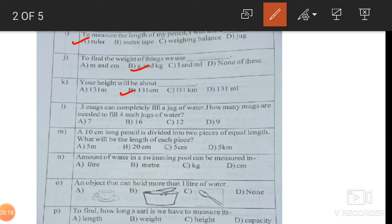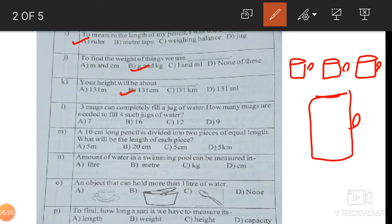The 3 mugs - I'm drawing here for you to understand - will fill up a jar. So how many mugs will you need to fill in 4 such jugs? This is 3. It's like a question that you have to immediately multiply. 3 times 4 is 12. It's going to be 12. So it's going to be 3 mugs. This type of 3 mugs can completely fill in 1 jug. So 4 jugs will be how much? Absolutely, you have to multiply, 4 times 3 is 12. It's so simple.